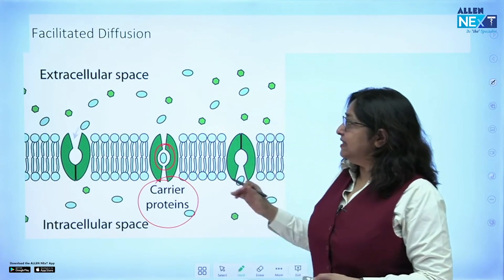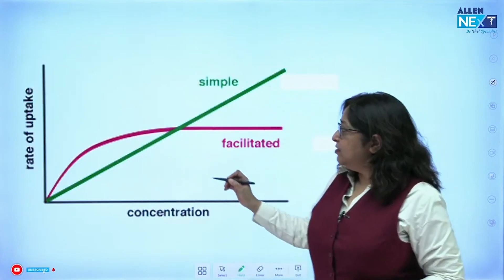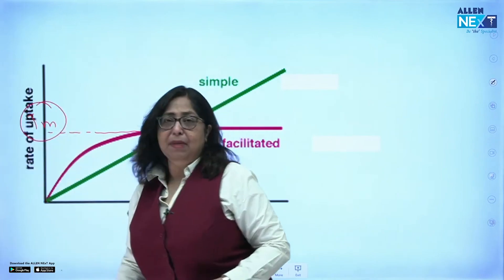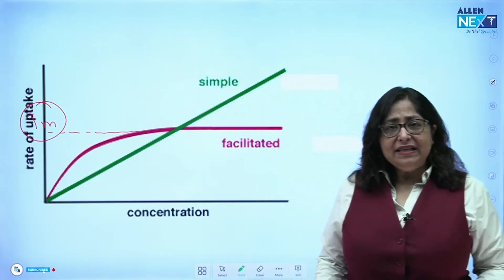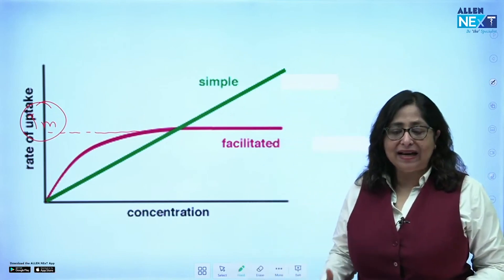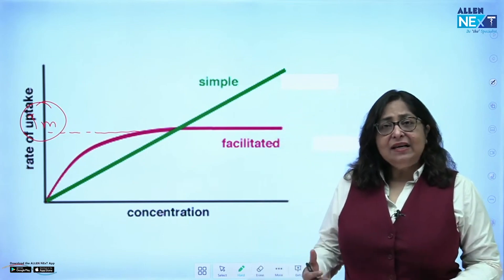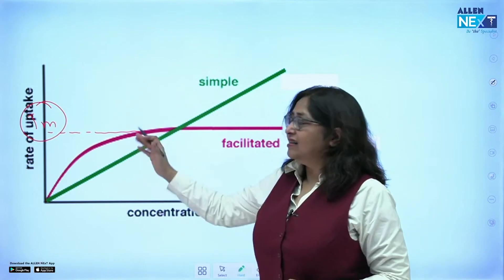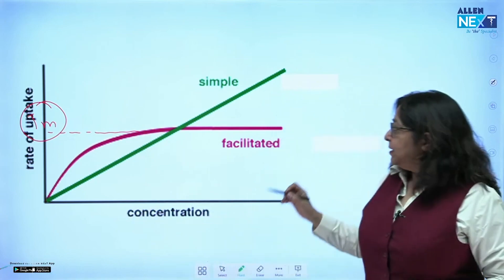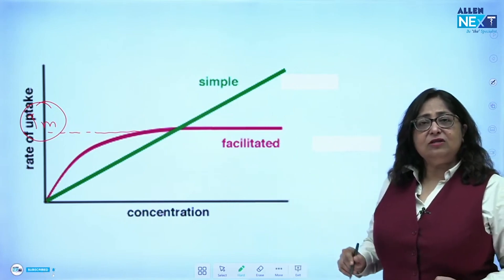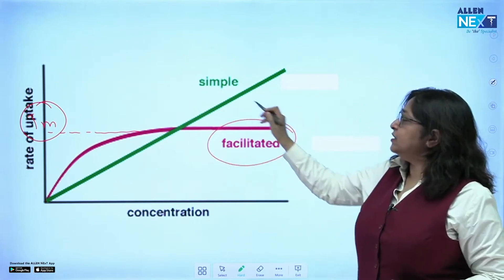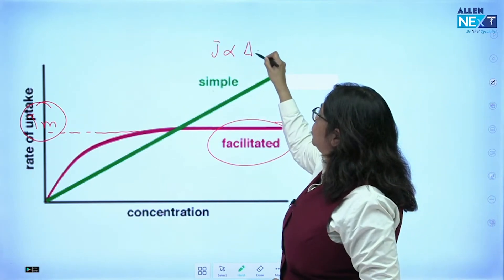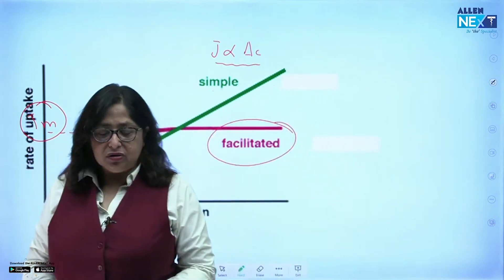Whenever a carrier is involved in transport, there is always a maximum rate of transport called transport maxima. Carrier-mediated transport such as facilitated diffusion will show transport maxima because the carrier protein tends to get saturated. Transport maxima is seen in facilitated diffusion but not in simple diffusion. In simple diffusion, transport is directly proportional to the concentration gradient.